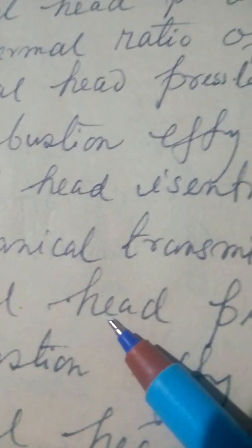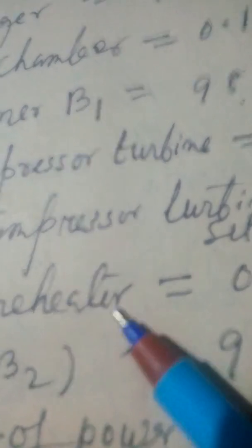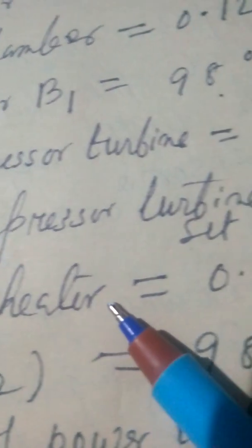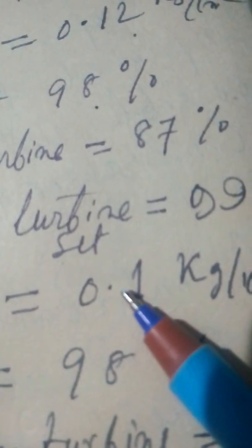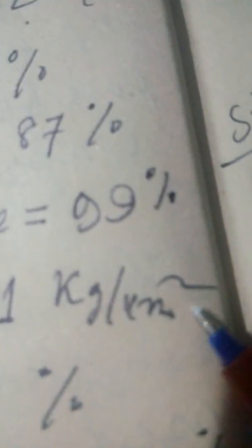Total head pressure loss in reheater, here it is heat exchanger, is equal to 0.1 kg per centimeter square.